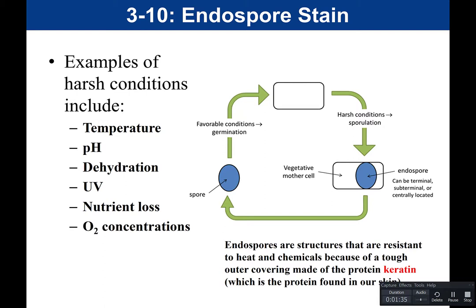Other harsh conditions include nutrient loss — not enough food — as well as oxygen concentrations. For aerobic bacteria that grow where oxygen is present, when O2 is not available, that's seen as a harsh condition. On the flip side, anaerobic bacteria that grow without oxygen would see the presence of O2 as a harsh environment, and in that case would form endospores. These are just some examples of harsh conditions in which bacteria will form endospores.